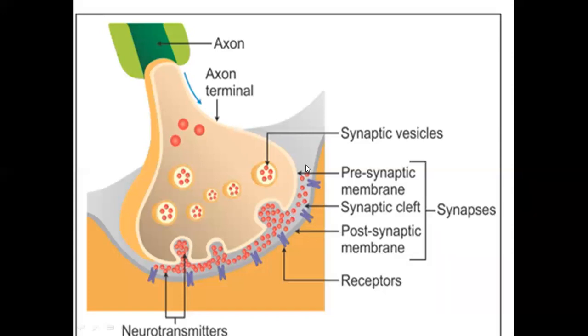When a nerve impulse arrives here, calcium channels open. These calcium channels open when the nerve impulse arrives. Calcium enters the cell from outside.